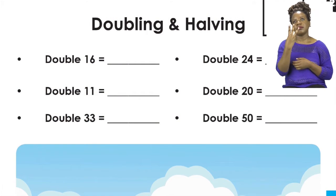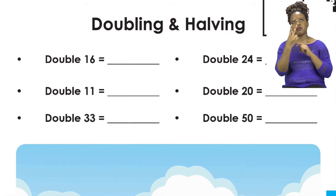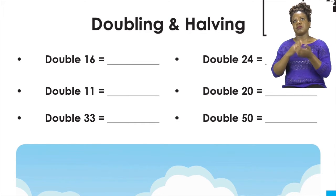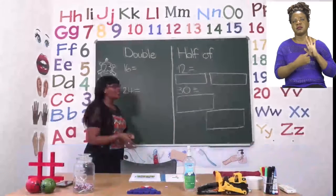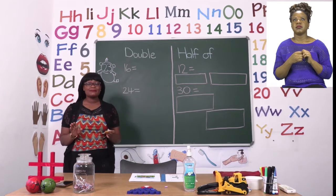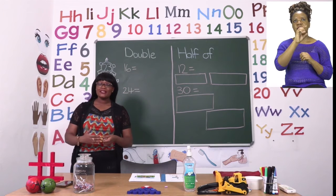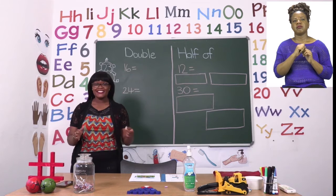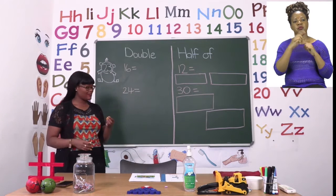On page 23 we will be doubling and halving. We're going to start with doubling and we're going to do double 16 and then we will do double 24. Now remember boys and girls, doubling just basically means the number you've been given you must add. It's so simple.